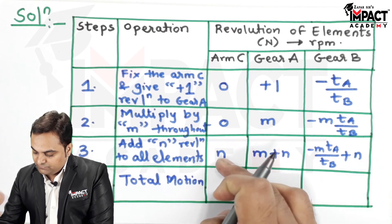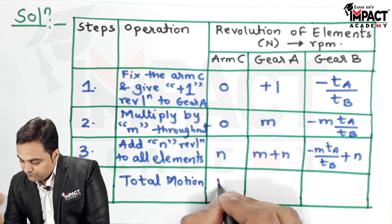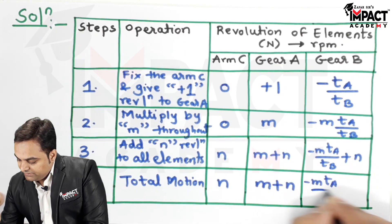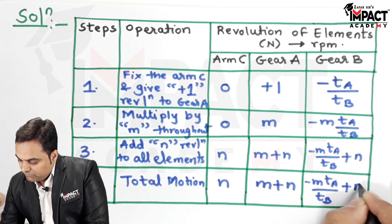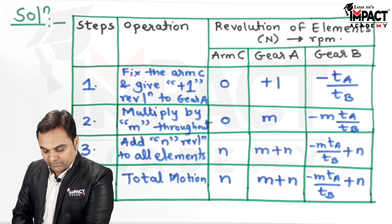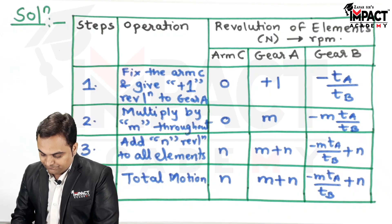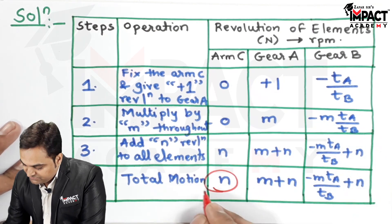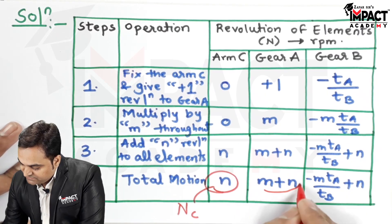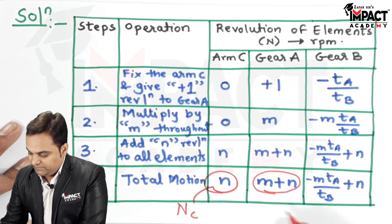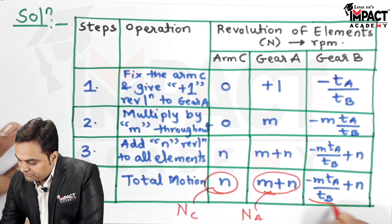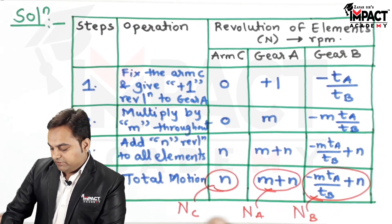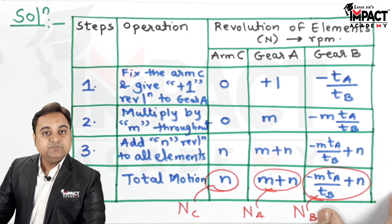The total motion from the table is: arm C has speed n, gear A has speed m plus n, and gear B has speed -m × T_A / T_B plus n. These total motions represent the actual RPM values, where small n is the speed of arm C (N_C), m plus n is the speed of gear A (N_A), and the last expression is the speed of gear B (N_B).